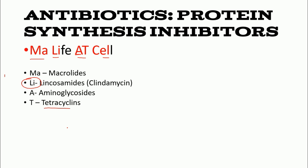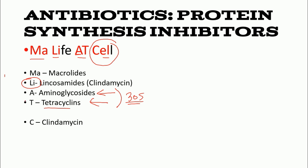Aminoglycosides and tetracyclines are 30S subunit inhibitors. The 50S inhibitors come from the second part of the mnemonic — 'cell.' C stands for clindamycin, also part of lincosamides, and it's a 50S inhibitor. E stands for erythromycin, also a 50S inhibitor — erythromycin is a type of macrolide, so you should remember that. These two parts are 50S inhibitors.